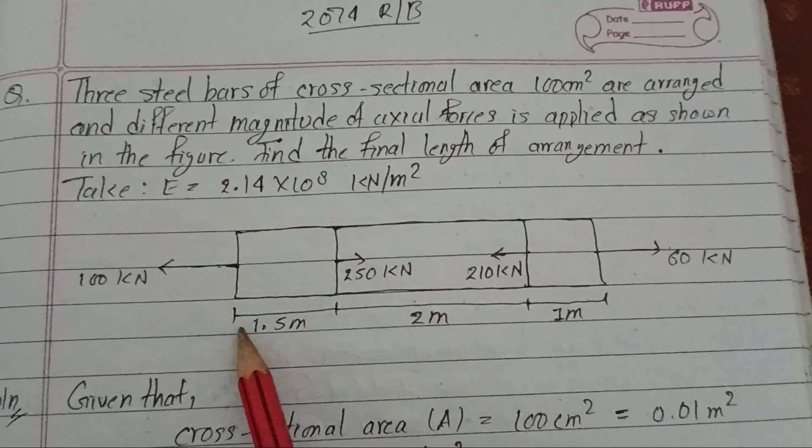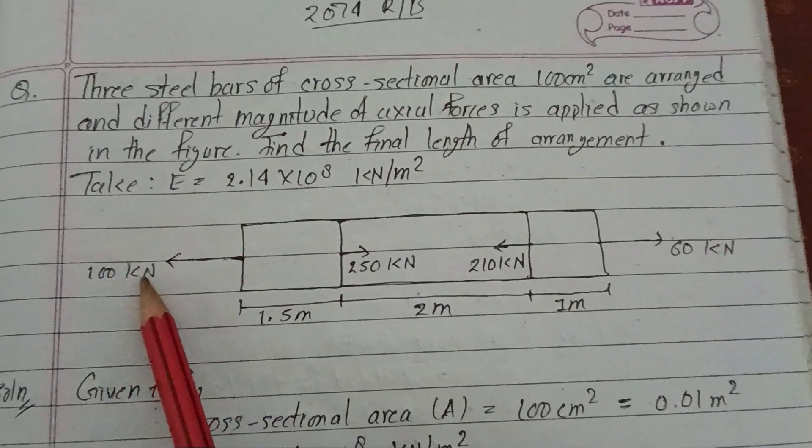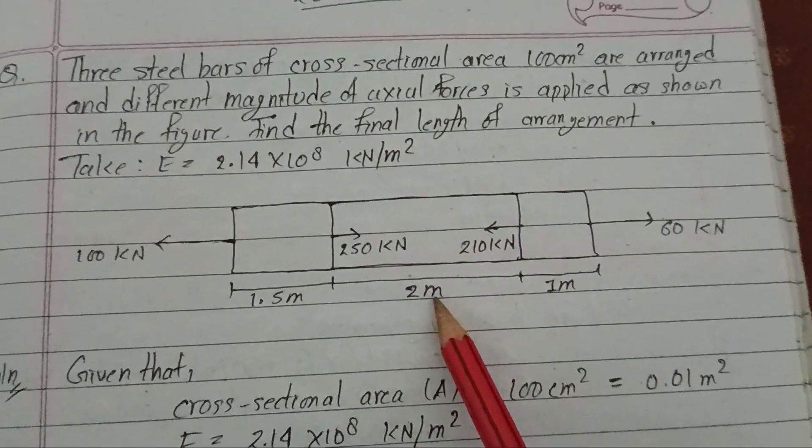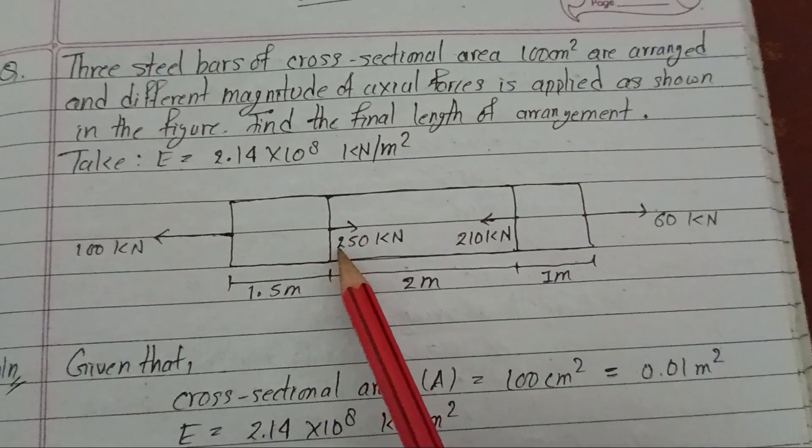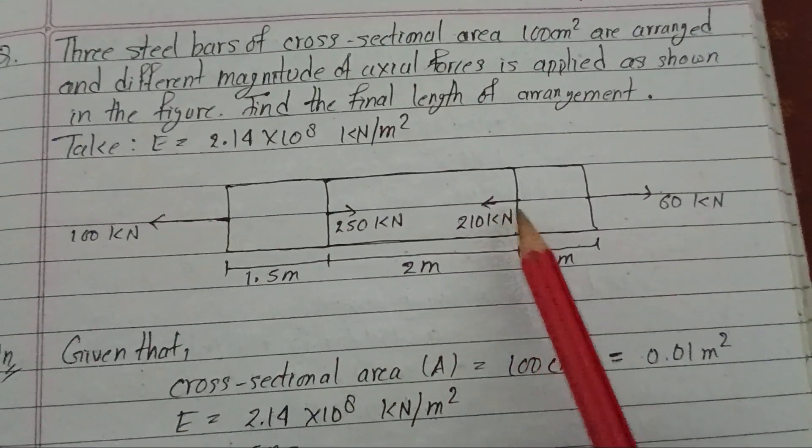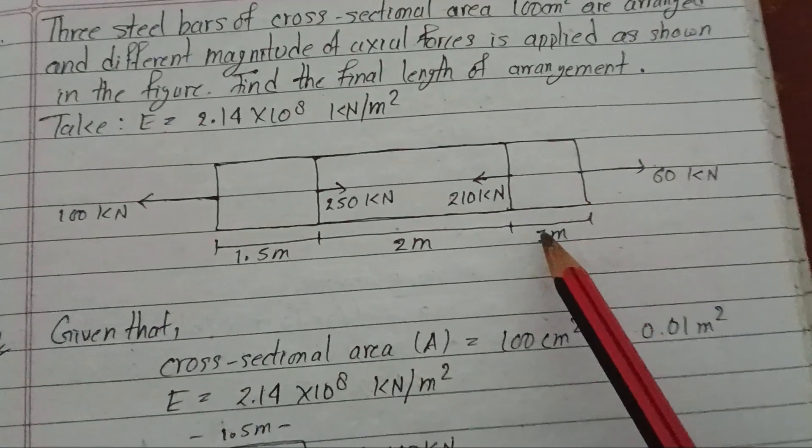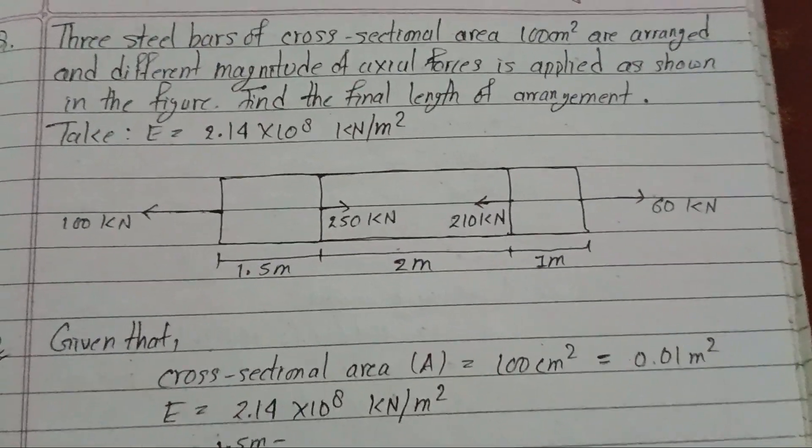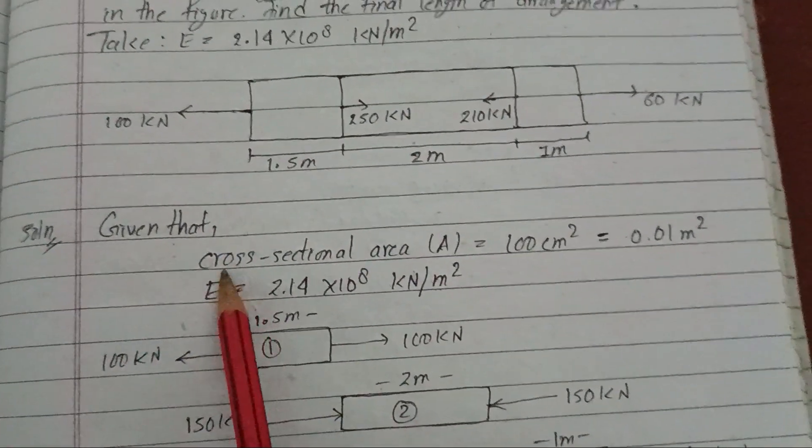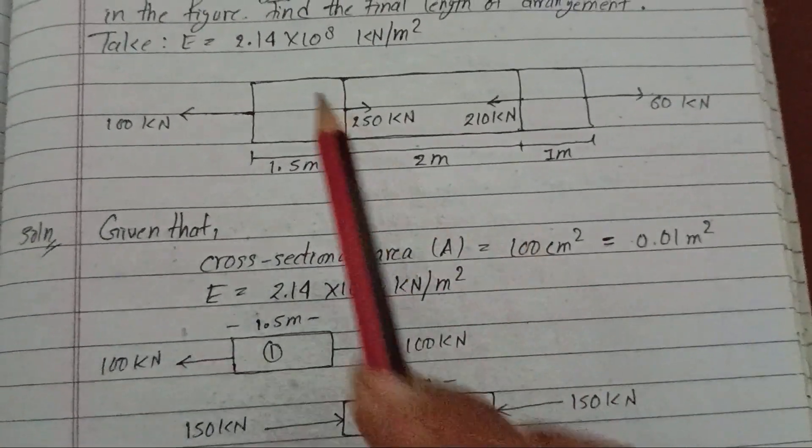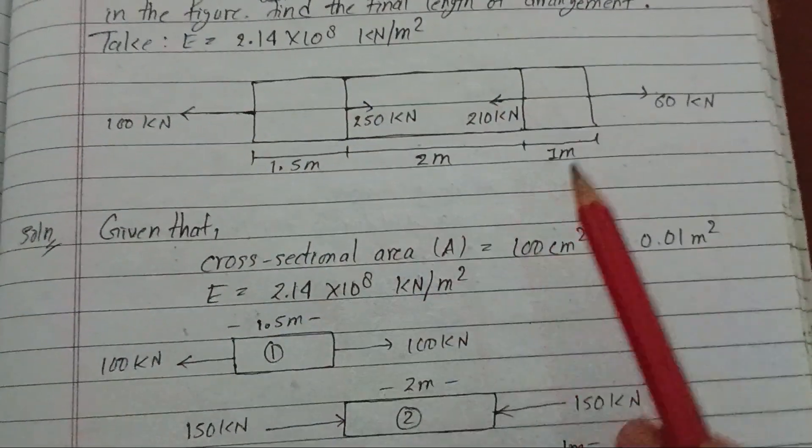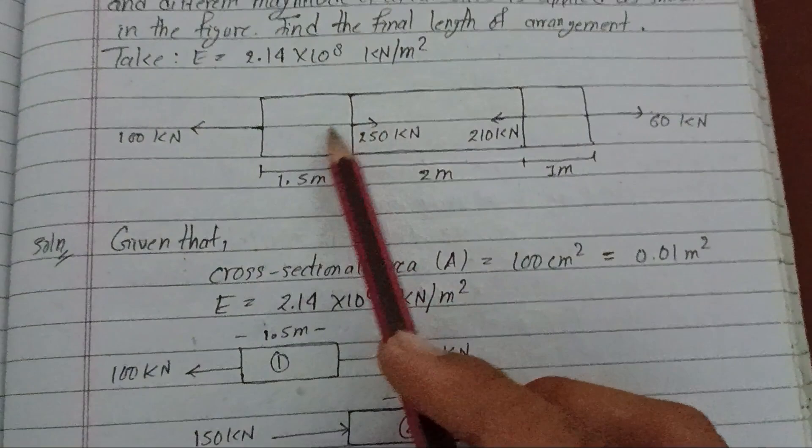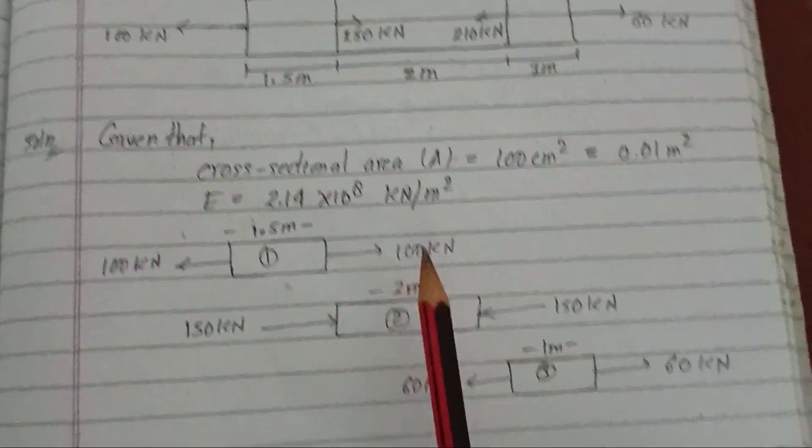So we have three steel bars. The first bar is 1.5 meter length and 100 kilonewton tensile force is applied. The second bar is 2 meter length and a compressive force of 250 kilonewton and 210 kilonewton is applied. The third one is 1 meter length and 60 kilonewton tensile force is applied. The cross sectional area is the same, given as 100 cm square. E equals 2.14 into 10 to the power 8 kilonewton per meter square.